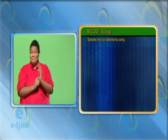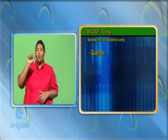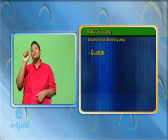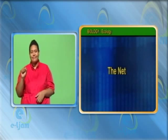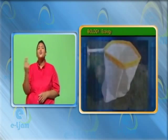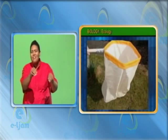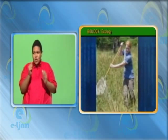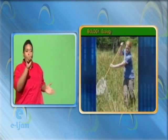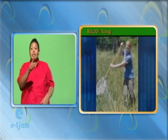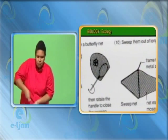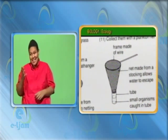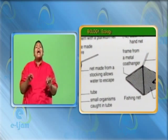Samples may be obtained by using quadrats, nets, bottles, and transects. Nets are used for sampling small moving animals and are generally made of a small mesh with a handle approximately 1 m long. The mouth of the net is swept through the vegetation in order for dislodged animals to drop into the mesh or bag. The size of the mesh used will determine the size of animals captured.